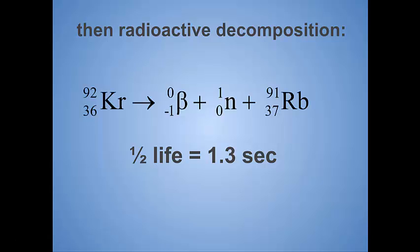Half-life of this reaction is 1.3 seconds, that means if you have 100 atoms of krypton-92, after 1.3 seconds, you'll have 50 left. The other 50 will have decayed to rubidium-91. After another 1.3 seconds, you'll have 25 left, half of what you just had. After another 1.3 seconds, you'll have 12 and a half, 13 atoms left, and so on. That's what half-life is. We're not going to spend too much time on half-life.